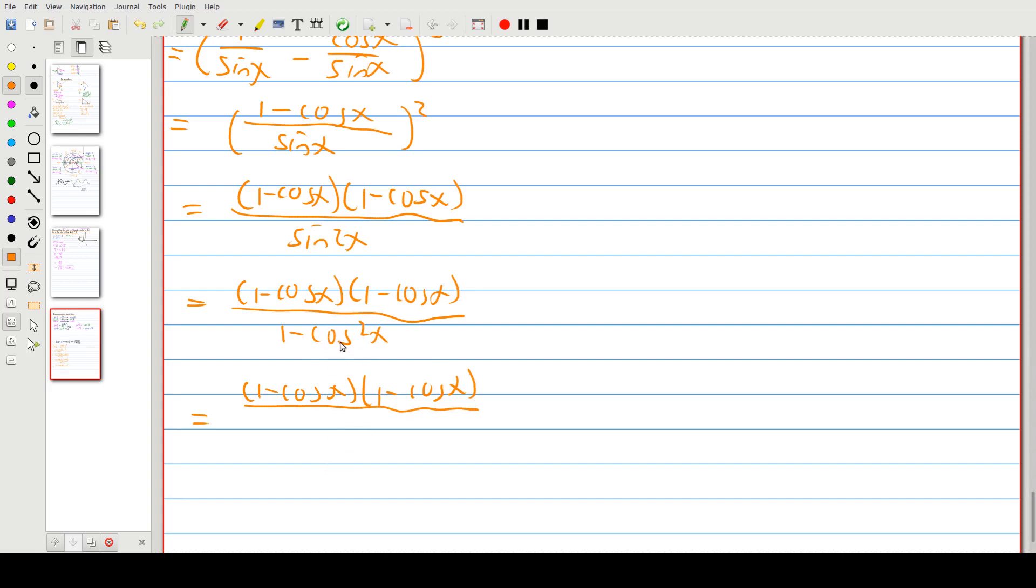And the difference between two squares we know we get two brackets. One gets plus, one gets a minus, and then the square root of the first term is the first term in each bracket. And the square root of the second term is the second term in each bracket. So cos x cos x.